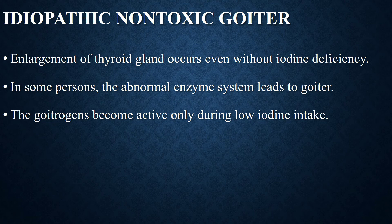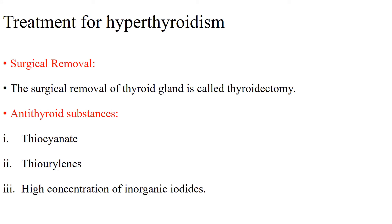Idiopathic non-toxic goiter is goiter due to unknown cause — enlargement of the thyroid gland occurs even without iodine deficiency. It is suggested that these patients are affected first by thyroiditis, which reduces the synthesis of thyroid hormones. In some persons, an abnormal enzyme system leads to goiter due to deficiency of enzymes like peroxidase, iodinase, and deiodinase, which are required for thyroid hormone synthesis. Some foodstuffs contain goitrogenic substances such as goitrin. These substances contain antithyroid compounds like propylthiouracil, and such goitrogens are found in vegetables like turnips and cabbages. Soybean also contains some amount of goitrogens. Goitrogens become active only during low iodine intake.